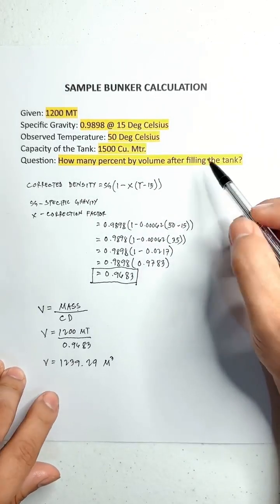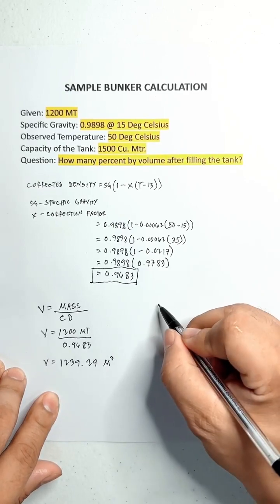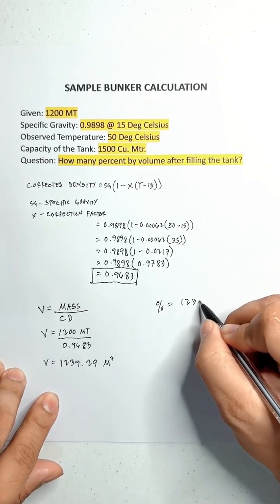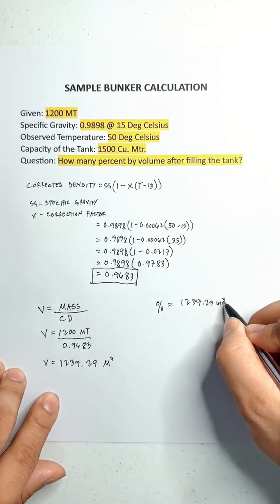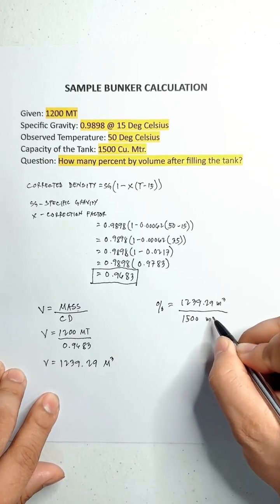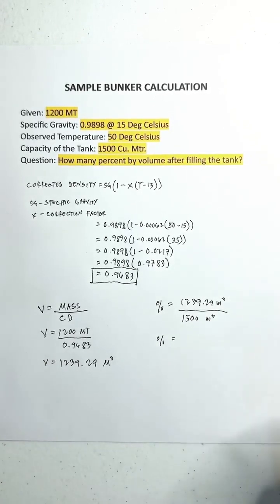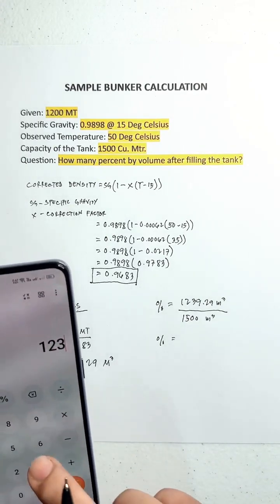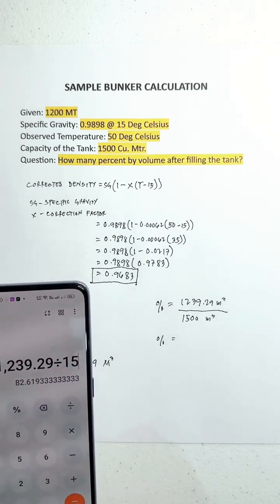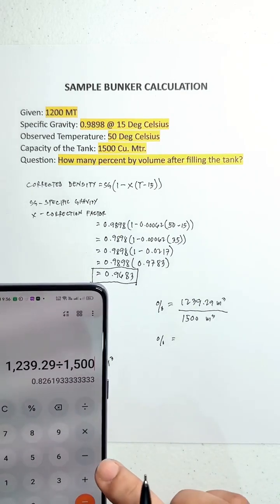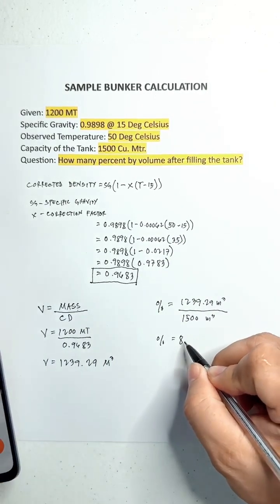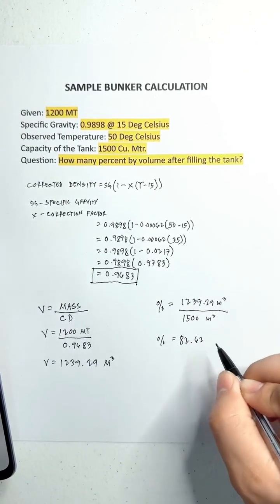The question is how many percent by volume after filling the tank? So we calculate 1,239.29 divided by 1,500 times 100, which equals 82.62%.